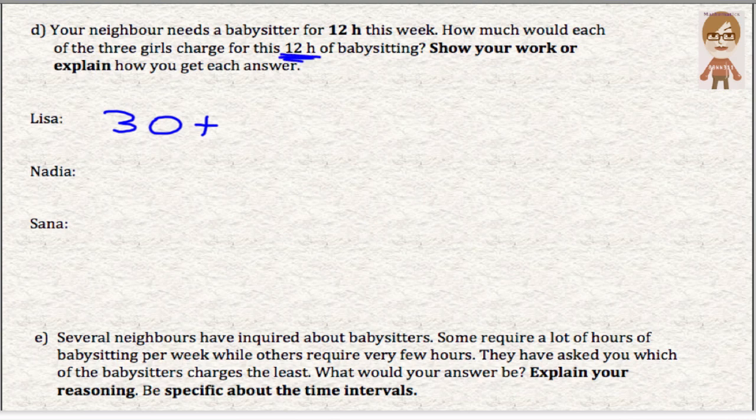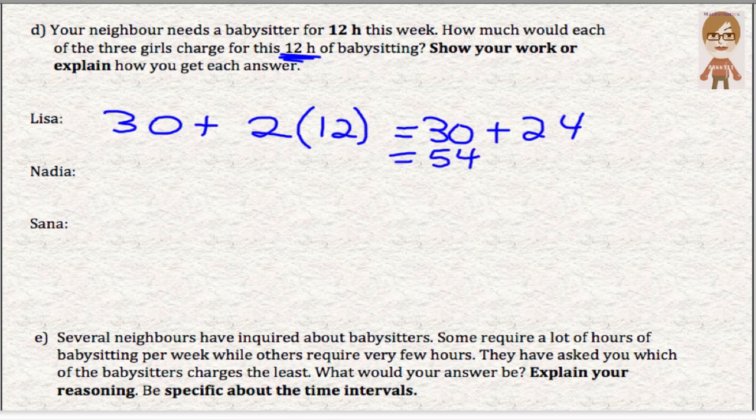And two hours, that's at $12 an hour. So we would have 30 plus 24, which is 54. So Lisa must charge $54 for babysitting.